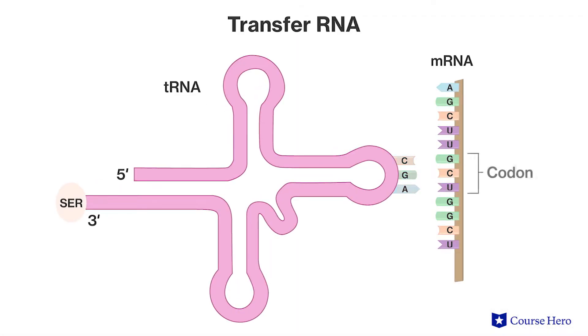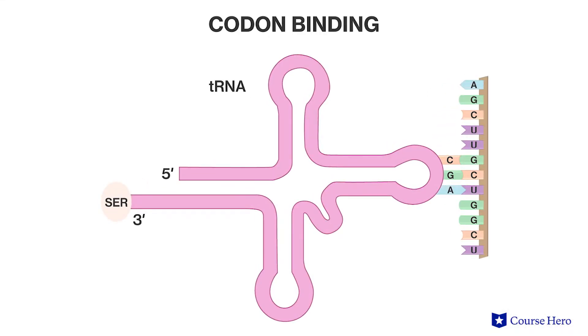tRNA has the very important function of making sure the mRNA molecule is read correctly and that the correct amino acids are assembled based on the mRNA codons. Each codon consists of three RNA bases that code for a specific amino acid, and each tRNA molecule has an anticodon which base pairs with the complementary codon. Each tRNA molecule also has a binding site for an amino acid corresponding to the codon it recognizes. For example, this tRNA is bound to the codon UCG, which codes for the amino acid serine, and is bound to serine at the other end.